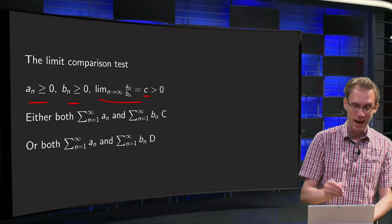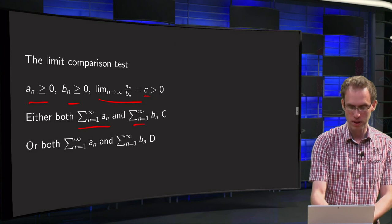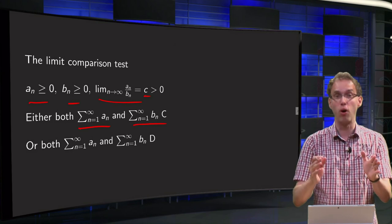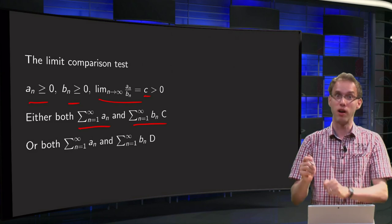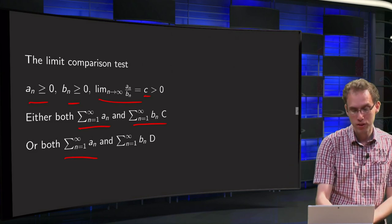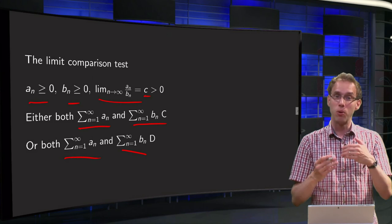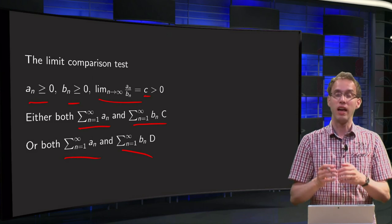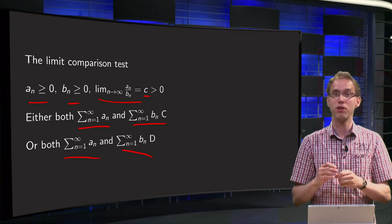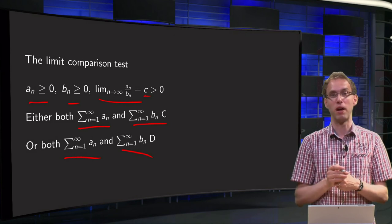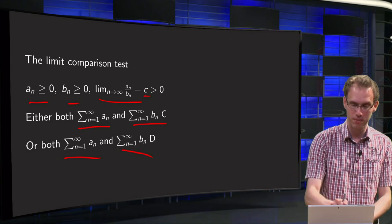The test tells you that either both your sum of a_n and your sum of b_n are convergent, or they will both be divergent. So how will you use it? If you know your sum of b_n is convergent and you can apply the limit comparison test, then you know the same holds for your sum of a_n.